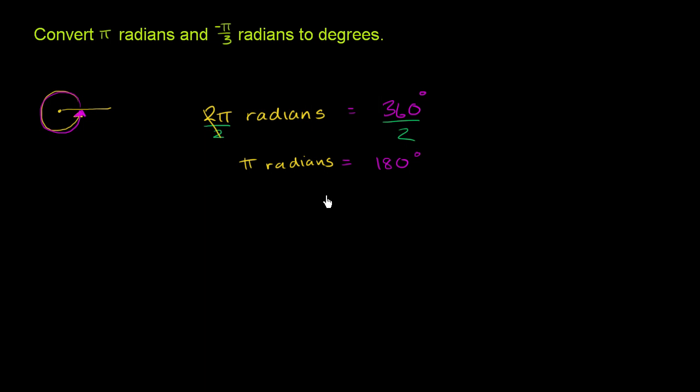which actually answered the first part of our question. We wanted to convert π radians. Well, we just figured out π radians are equal to 180 degrees.